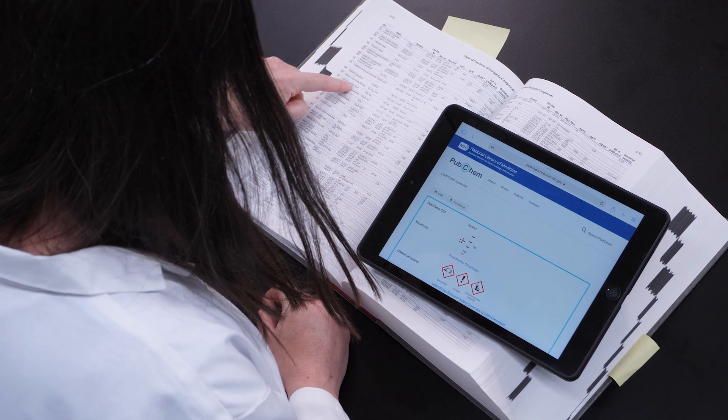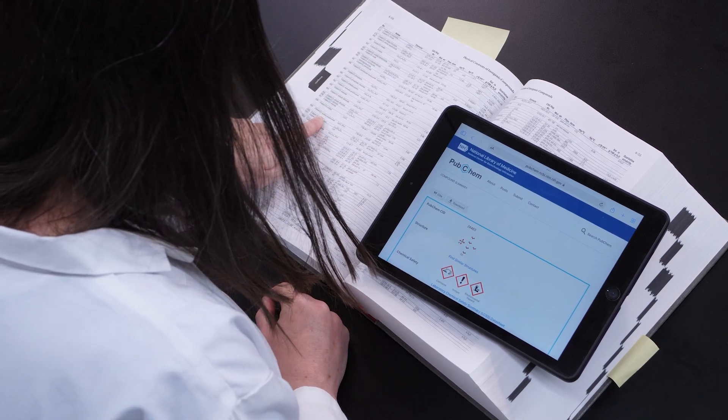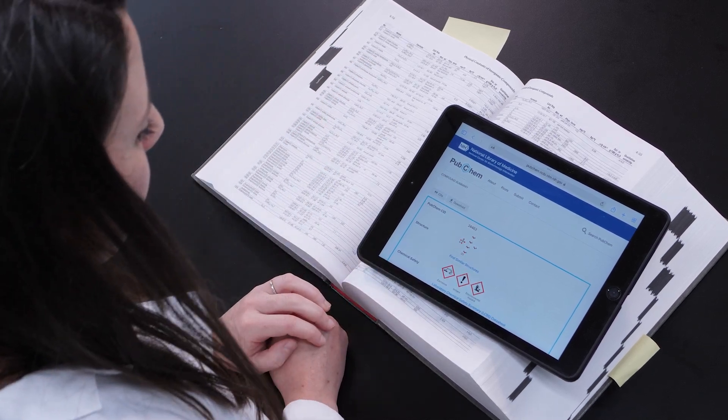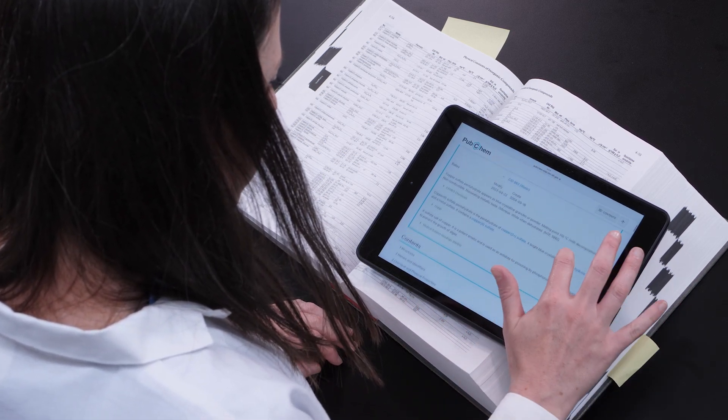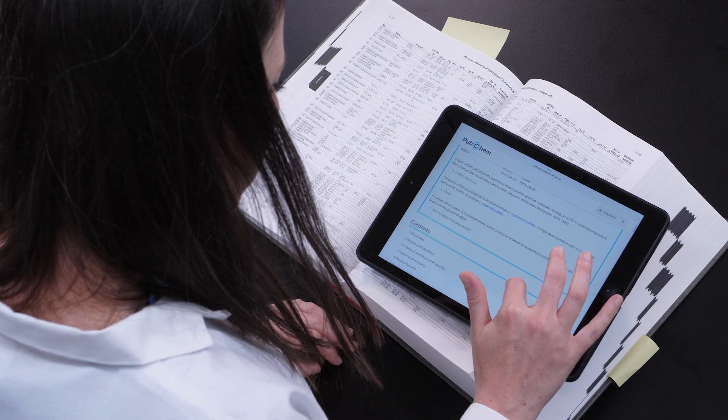After making observations, we conduct some research. Research is the data collected by reading things others have discovered relating to the problem. Research can include books, papers, and articles written on the subject by others.